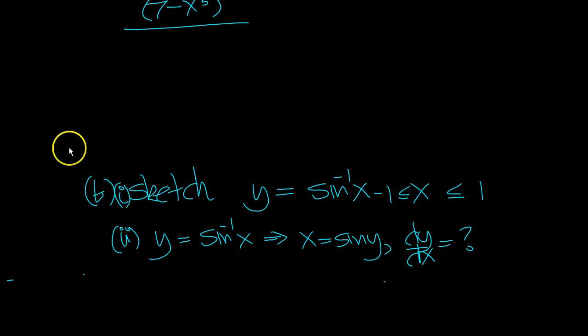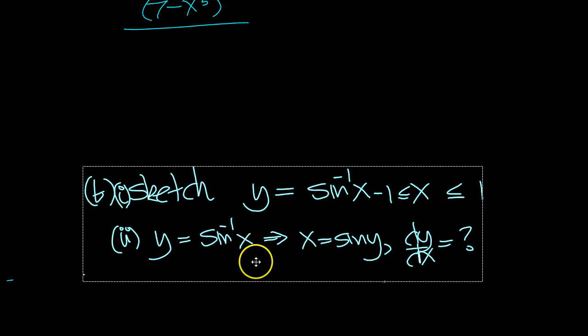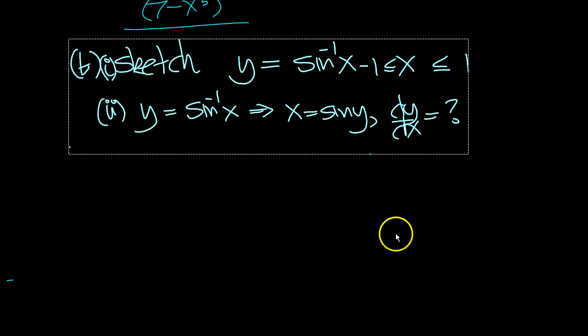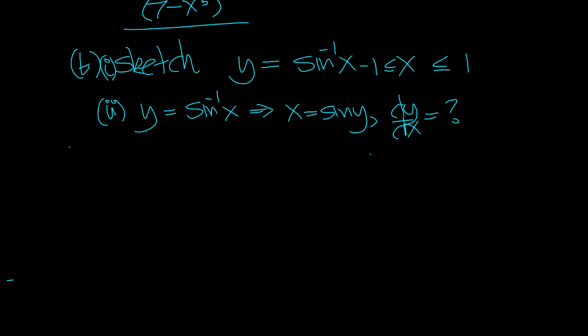Now part B. Let's have a look at this. So we need to sketch y equals sine to the minus 1. So let's sketch the sine function first, which we know looks like this. There's minus pi over 2, there's pi over 2. Here's 1, here's minus 1. So using that information, that's a sine curve. We can sketch the inverse sine function now.